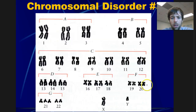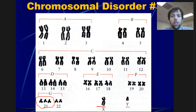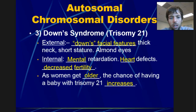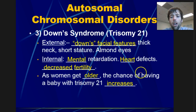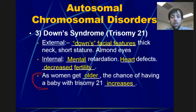Chromosomal disorder number three — where is it? It's not missing an X chromosome because this is a boy; we have an X and a Y. Ah, right here — chromosomal disorder at chromosome 21. We have trisomy 21, the one you are probably most familiar with: Down syndrome. People with Down syndrome have distinct facial features, thick neck, short stature, almond-shaped eyes, often mental retardation, heart defects, holes in their heart, and decreased fertility. As women get older, the percent chance of having a baby with Down syndrome goes up quite a bit.